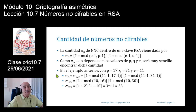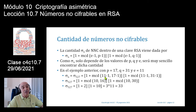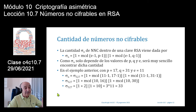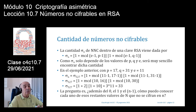En el ejemplo anterior con P=17, Q=31 y clave pública E=11, hago la operación: σ(527) = (1 + mcd(11-1, 17-1)) × (1 + mcd(11-1, 31-1)) = (1 + mcd(10, 16)) × (1 + mcd(10, 30)). El mcd(10, 16) = 2 y el mcd(10, 30) = 10. Tengo un 3 y un 11, 3 por 11 igual a 33, que es la cantidad de números no cifrables.